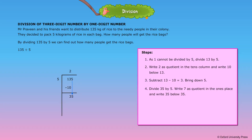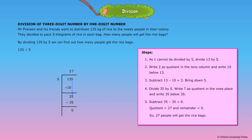Step 4: Divide 35 by 5. Write 7 as quotient in the ones place and write 35 below 35. Step 5: 35 minus 35 is equal to 0. Quotient is equal to 27 and remainder is equal to 0. So 27 people will get the rice bags.